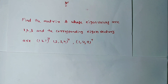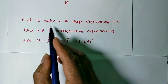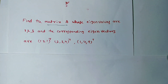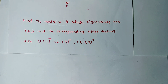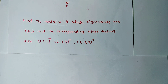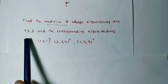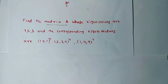What we have to find is the matrix A. Generally, if we are given matrix A, we find the eigenvalues and their corresponding eigenvectors. But some universities ask the reverse in long-answer theoretical problems. In this video, we will see how to find the matrix given its eigenvalues and eigenvectors. This problem can be solved in two methods.